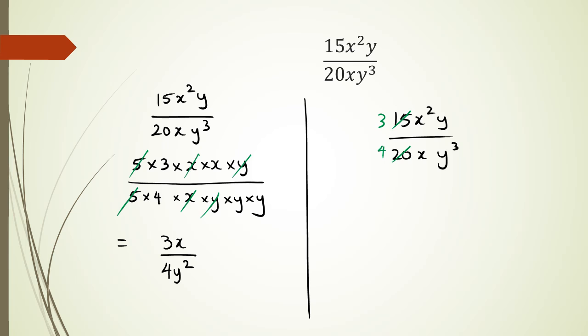Now with x squared and x, I know that there's going to be 1x to the power of 1 at the top. And then with y and y cubed, I'm going to have 2 at the bottom. So simplifying this, I have 3x over 4y squared.